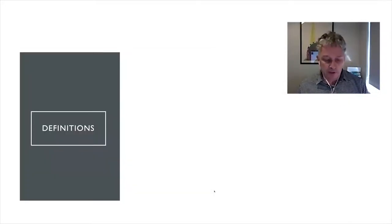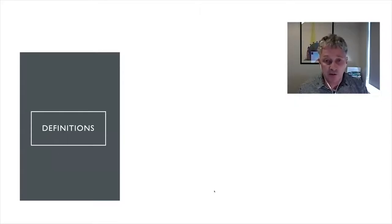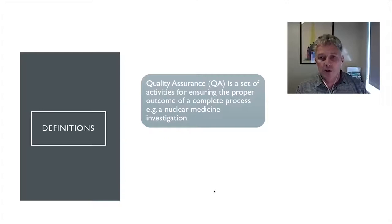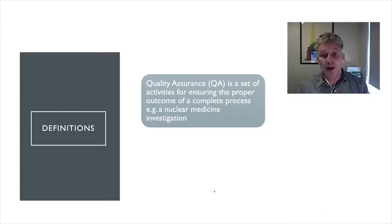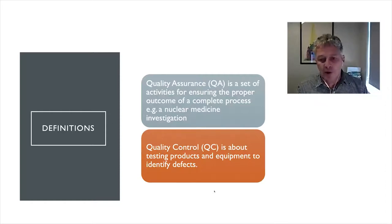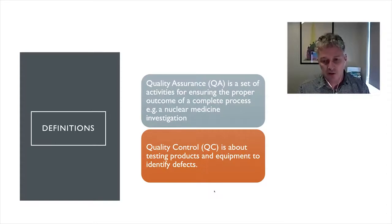Let's talk about the concept of quality assurance and quality control. First, some definitions. Quality assurance is a set of activities for ensuring the proper outcome of a complete process. In our field, we can consider this to be a nuclear medicine investigation — the whole investigation from referral to report. Whereas quality control is about testing products, equipment, or processes to identify any defects or issues.